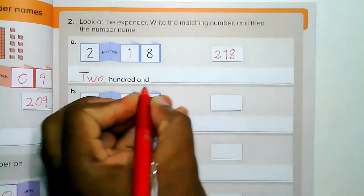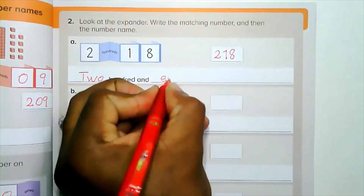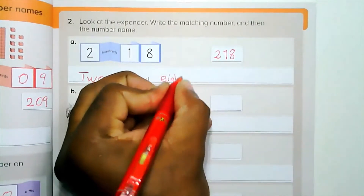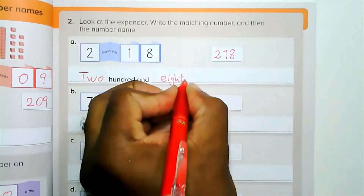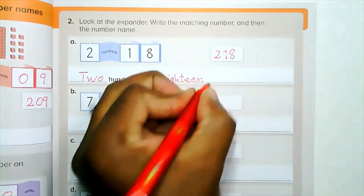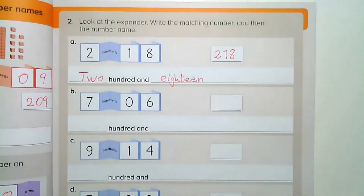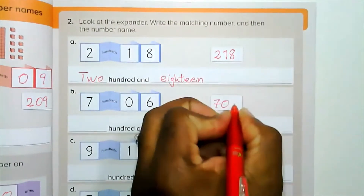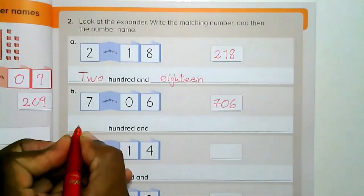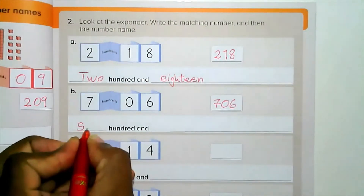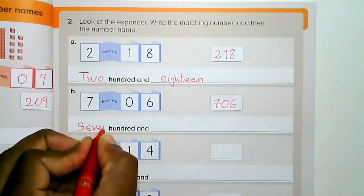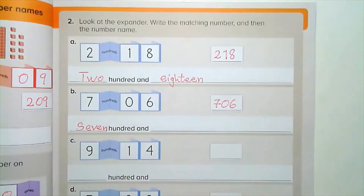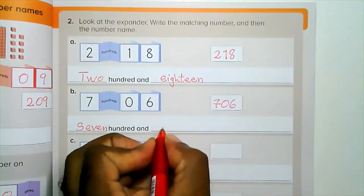We write two hundred and eighteen. Part B: write it as seven hundred and six, and in words: seven hundred and six.